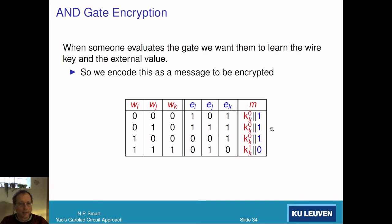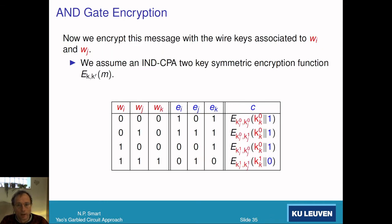Step two: we now encode the message as the key we want to output - k_k^0, k_k^0, k_k^0, k_k^1. But then we also concatenate the e_k value. Because this e_k value is public, it doesn't matter what it is. This depends on the row_k value. Now we encrypt that entire message with the two keys like we did last time.